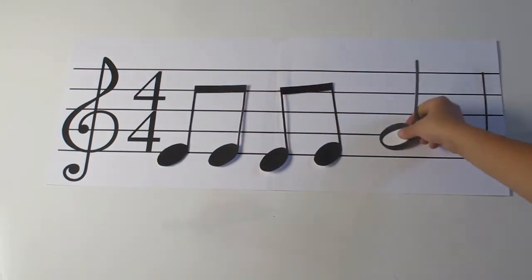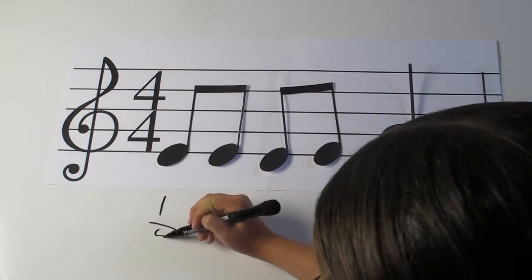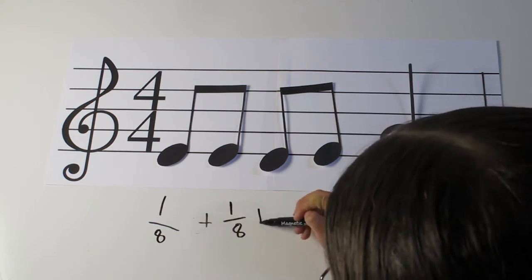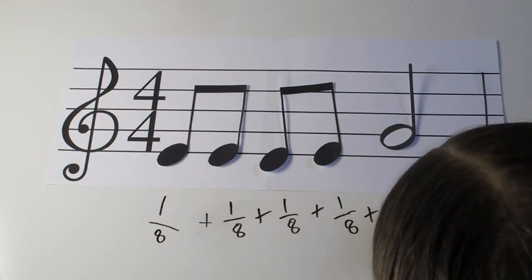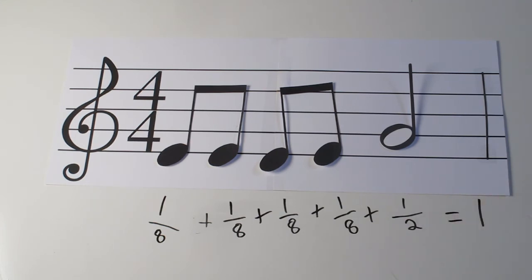If I have four eighth notes, then I can count one eighth plus one eighth plus one eighth note plus another eighth note plus a half note equals one whole note or four beats.